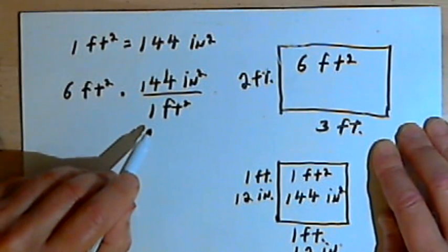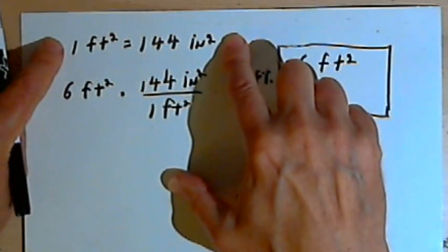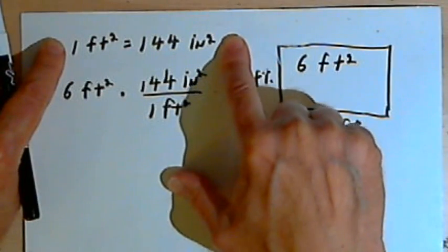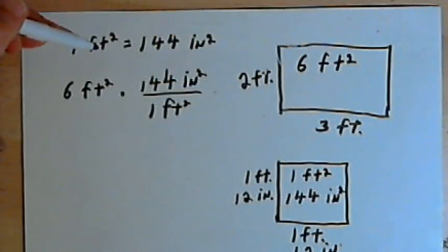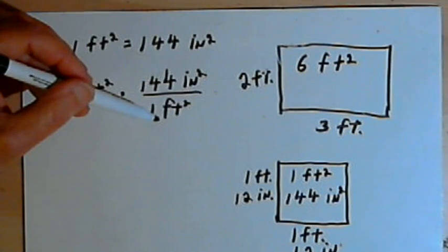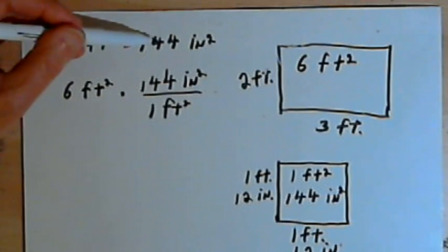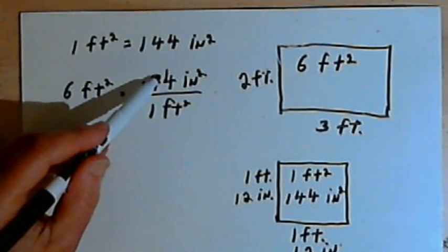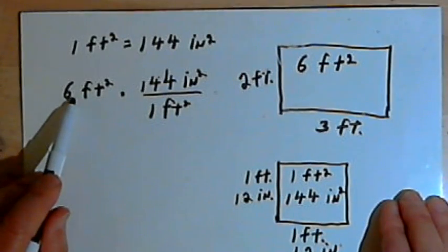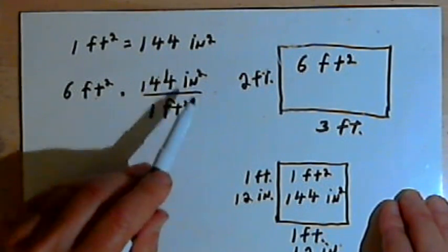Let me explain this fraction. I made it based on the equation 1 square foot equals 144 square inches. If the numerator of a fraction is equal to the denominator, then that fraction equals 1. Because of this equation, I know the numerator and denominator are equal to each other, so I'm just multiplying my 6 square feet by a fraction equal to 1.